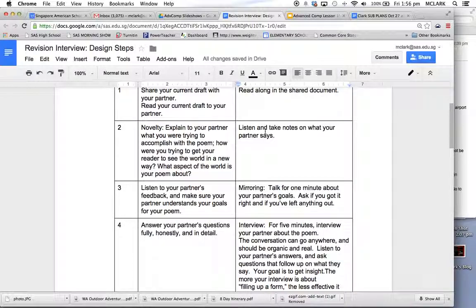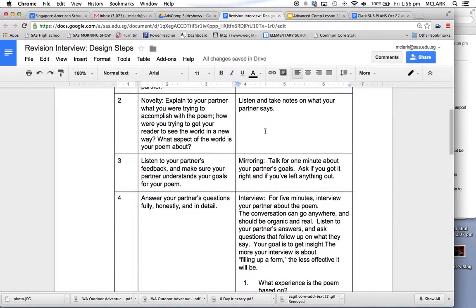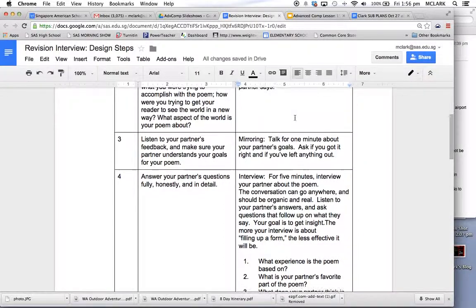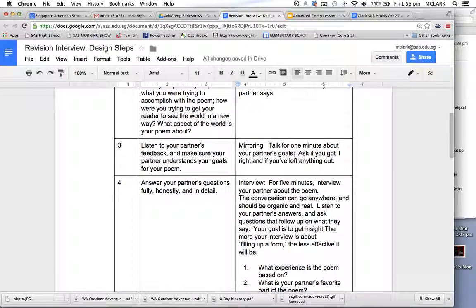The third step is to mirror. That was where partner two talks for one minute only about the partner's goals. So you mirror back what you've just heard and have a conversation and make sure that partner two understands exactly what partner one is trying to do with his or her poem.